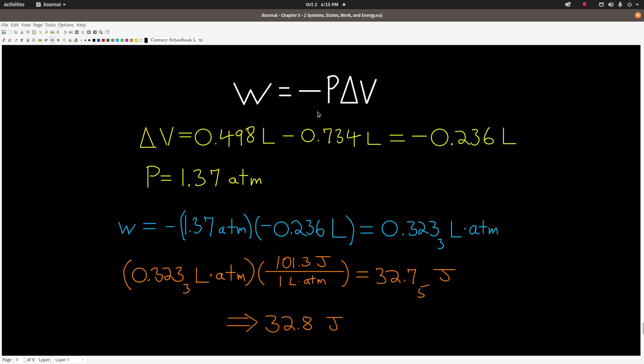Welcome back. So w equals minus P delta V. Delta V is, remember, final minus initial volumes, and we want it in liters. I gave you milliliters in the problem, so I just moved the decimal three places to the left to convert the milliliters to liters. So my delta V was 0.498 liters minus 0.734 liters, gives me negative 0.236 liters. And the pressure, it was constant - it's 1.37 atmospheres. So remembering this negative sign - watch out, remember you do that negative here - and the negative delta V gives us a positive amount of work: 0.323 liter atmospheres.